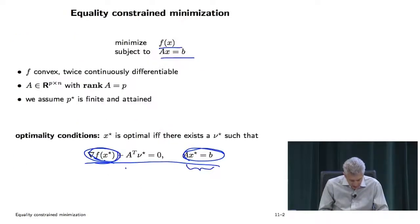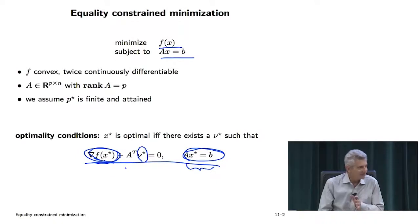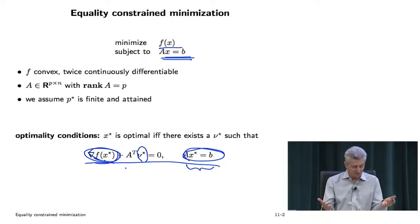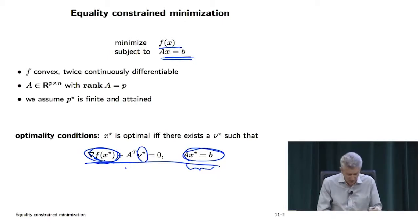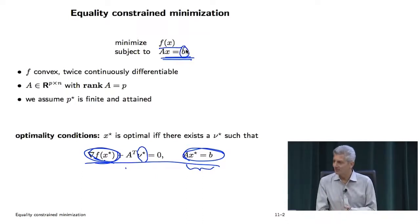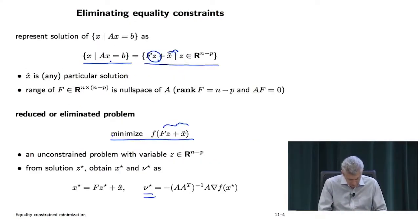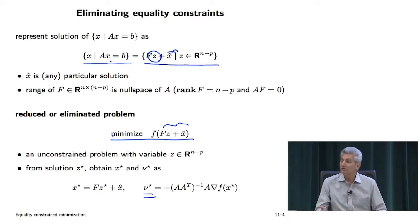The interpretation of nu-star is useful. If every row of the constraint is some kind of clearing constraint — say, the amount produced balances the amount consumed — then nu is a vector of the optimal prices of each of those commodities. The interpretation of nu-star is: what if you allowed a small change to b? Nu-star tells you how the optimal value would change. So at this point, you don't need any more theory about equality-constrained problems, because you just reduce it to an unconstrained problem.